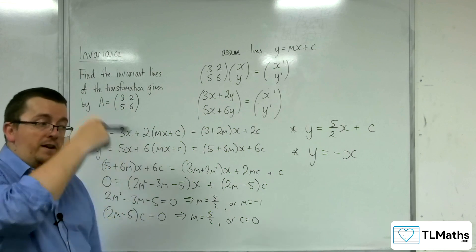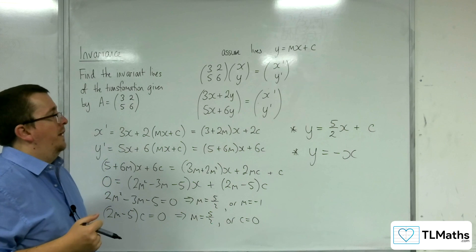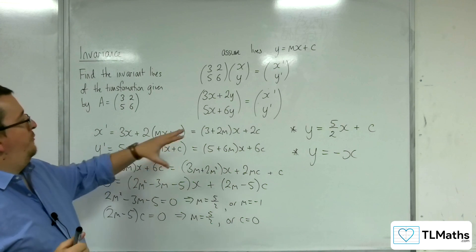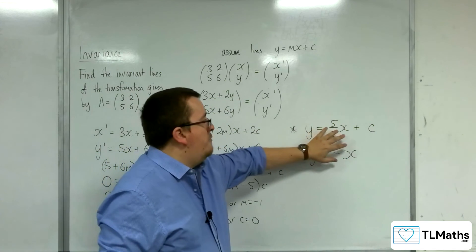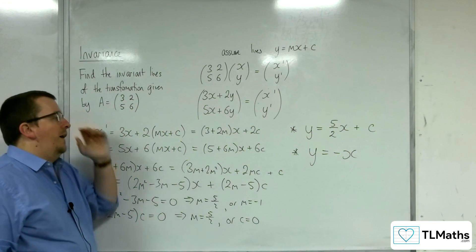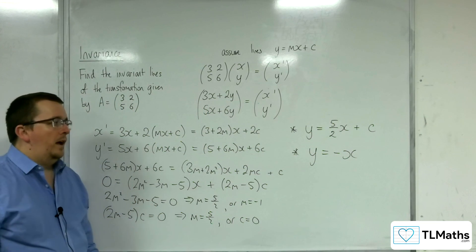They might move about the line, but they will remain on the line. So this is how you can find invariant lines of a 2 by 2 matrix.